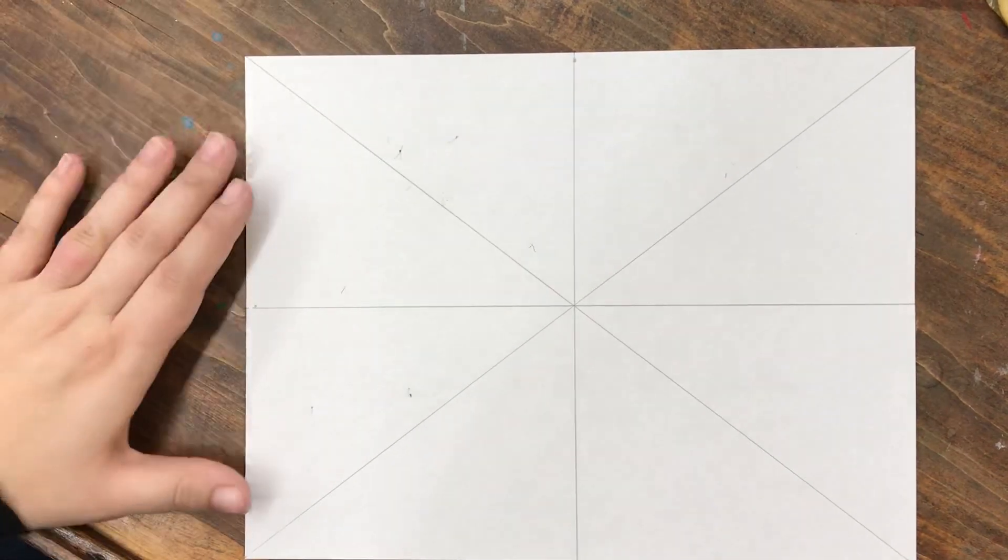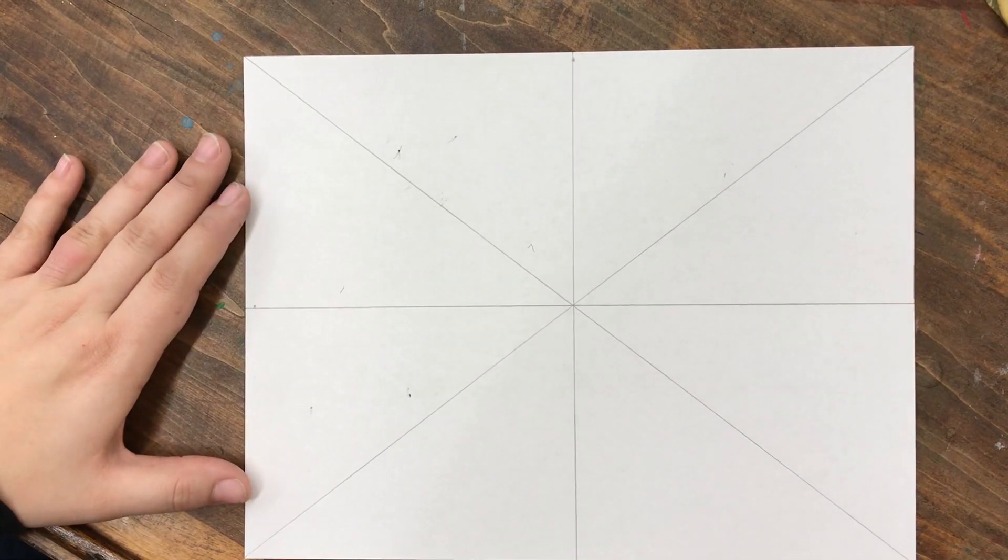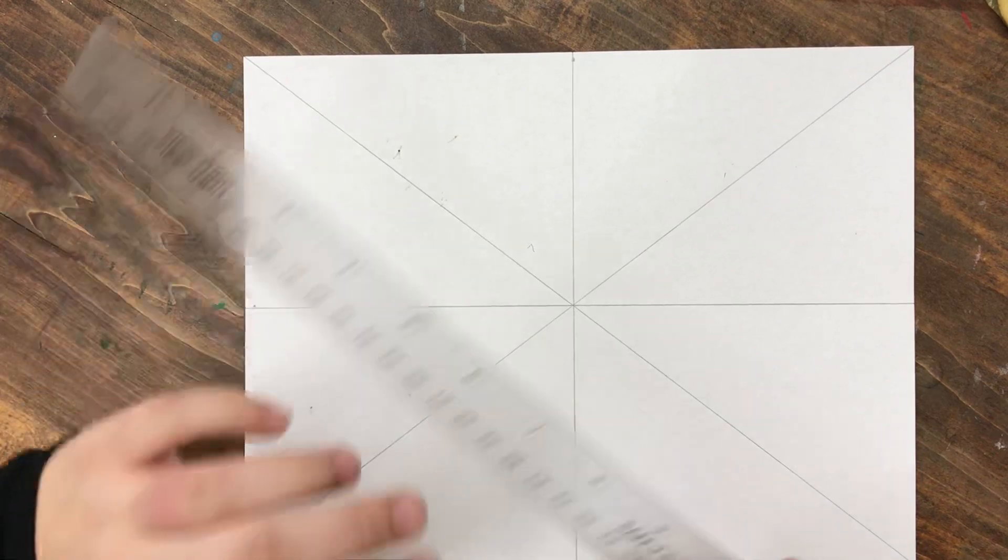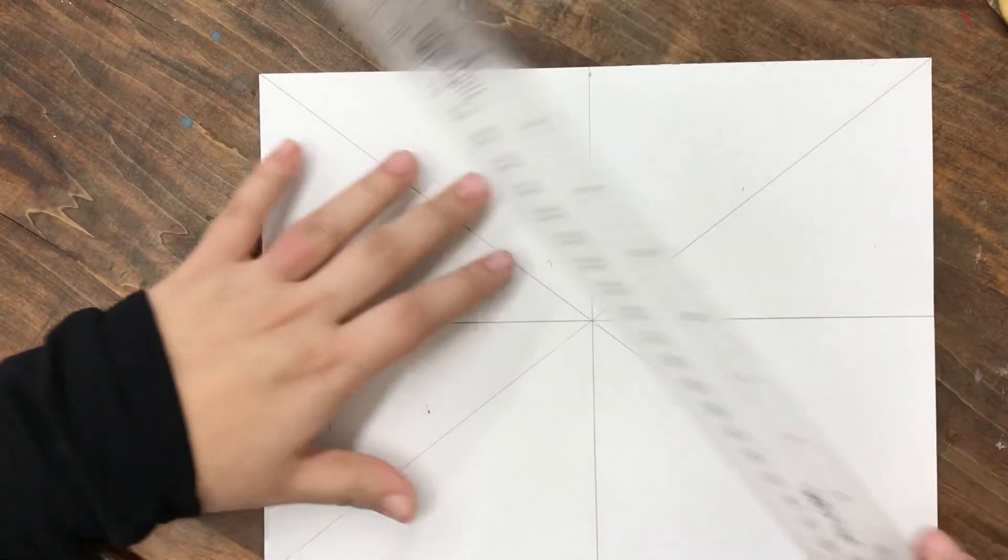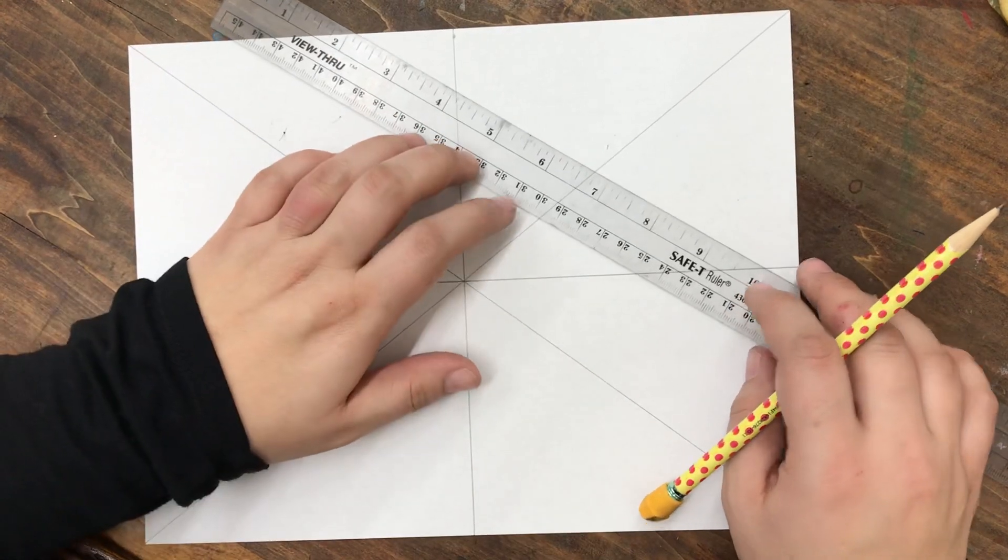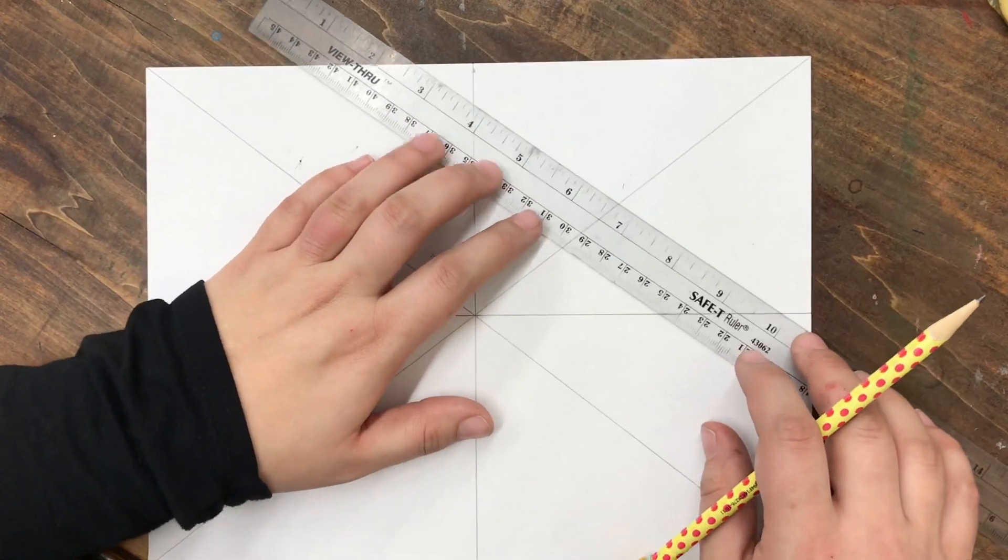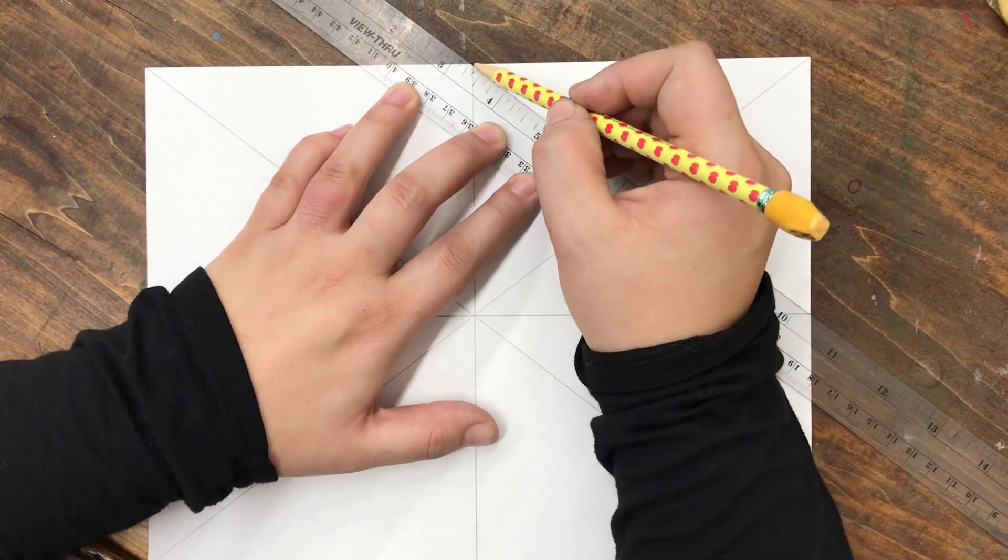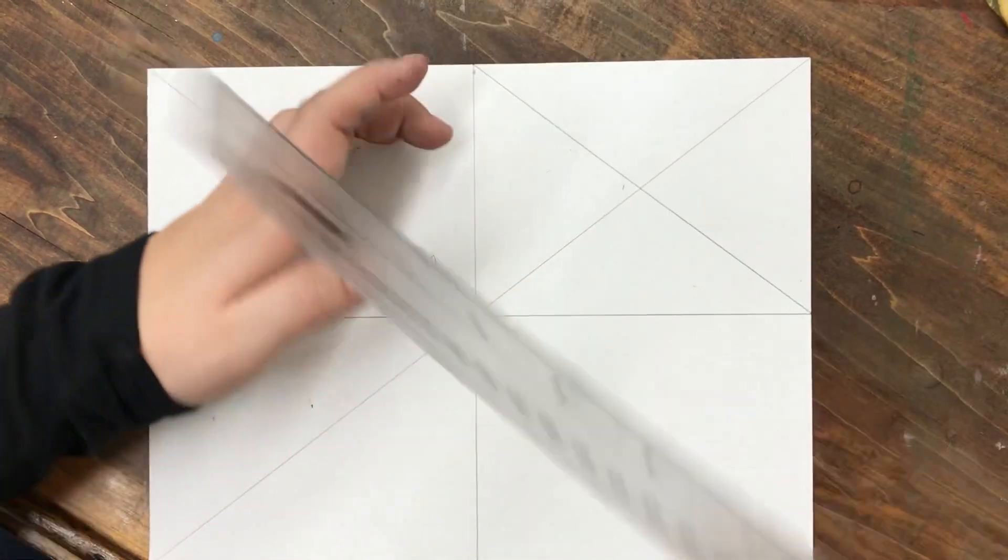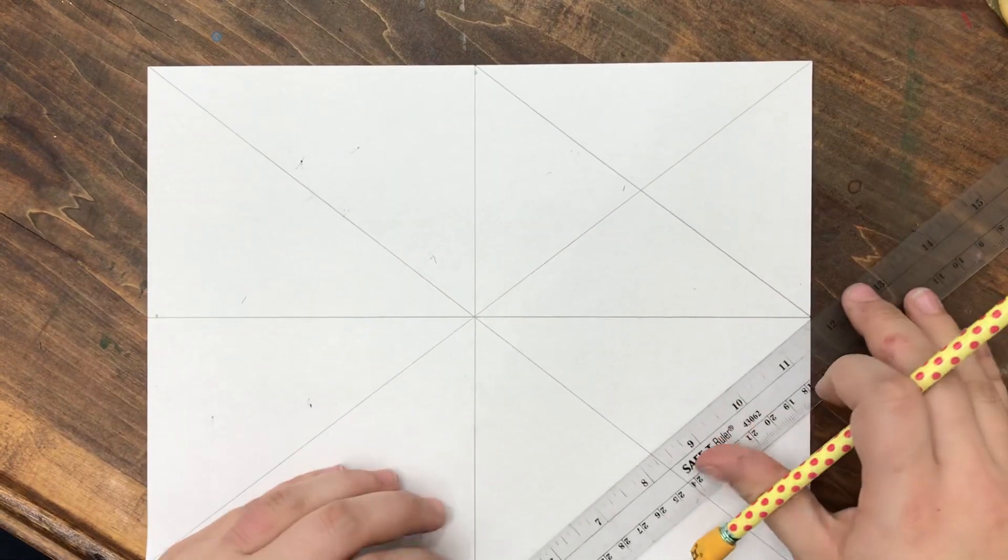I'm going to make a diamond next. So I've completed the X and the plus sign, and next is the diamond. You create the diamond by connecting the edges of where the lines of the plus sign end together. That's the start of the diamond. You can kind of see it start to form.